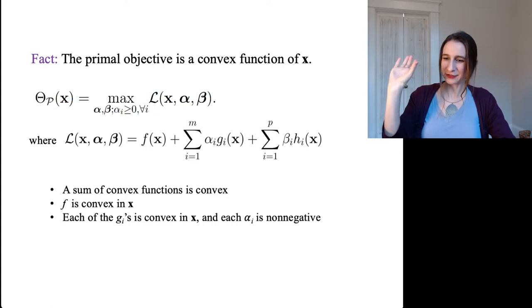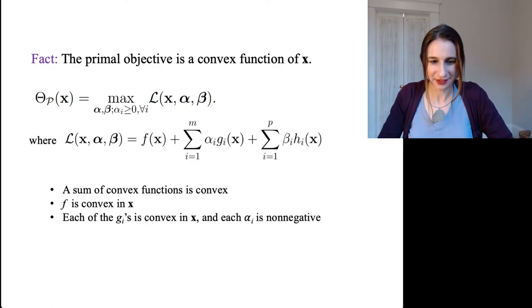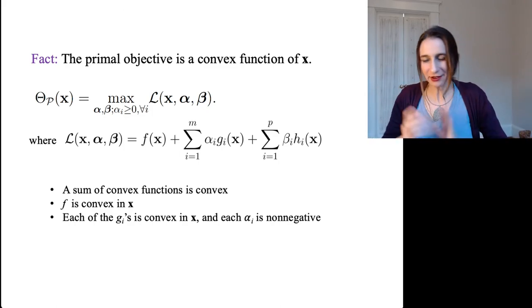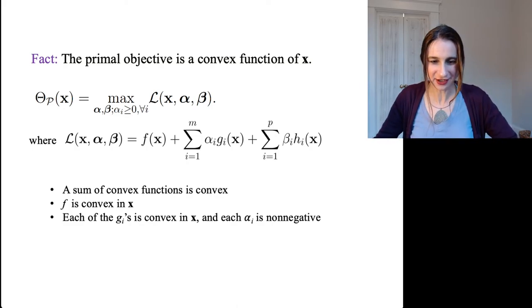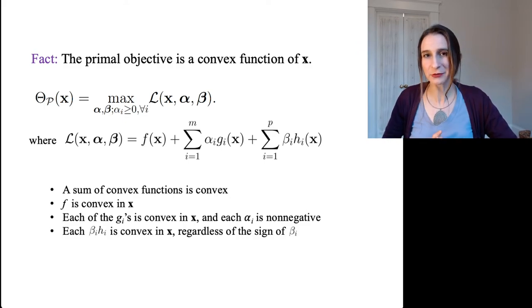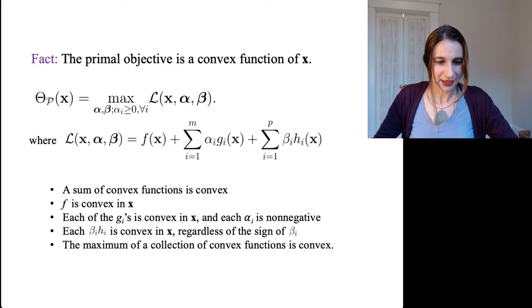we know that the negative of a convex function is concave, right? So that would violate, that wouldn't be good. Okay, but luckily all the alphas are non-negative and so we have a sum of convex functions so far. The h's are affine, which are both concave and convex, so in that case regardless of whatever the sign of beta actually is, then all of those terms are also convex.